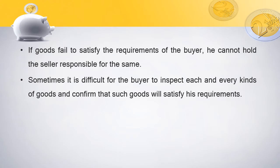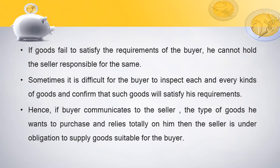In cases where the buyer cannot identify whether the goods will meet his requirements, if the buyer communicates to the seller the type of goods he wants to purchase and relies totally on the seller, then the seller is under obligation to supply goods suitable for the buyer. So if the buyer has already told the seller that he wants a particular type of goods for a particular requirement, and the buyer totally relies on the seller, and the seller does not provide such required goods, then the seller will be responsible.